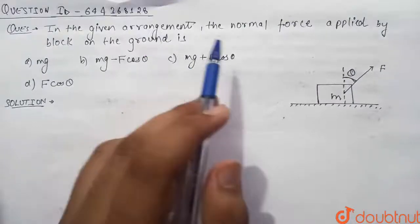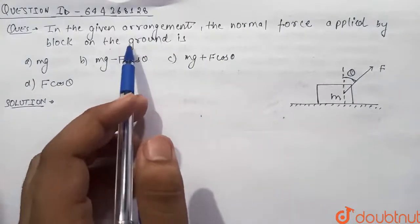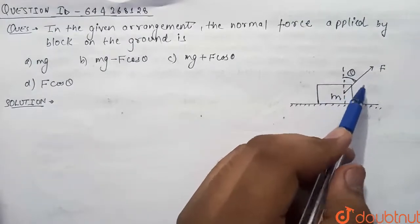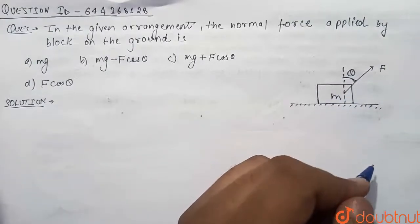Hello guys, so today's question is: In the given arrangement, the normal force applied by block on the ground is. So guys, see here in this question we have been given this block in which a force is applying and we have to find what is the normal force applied by the block on the ground.